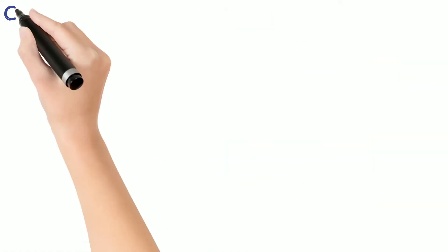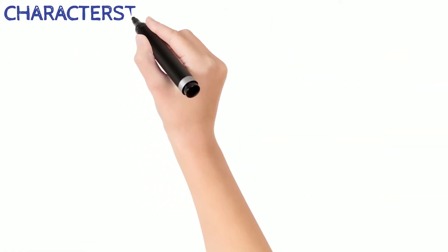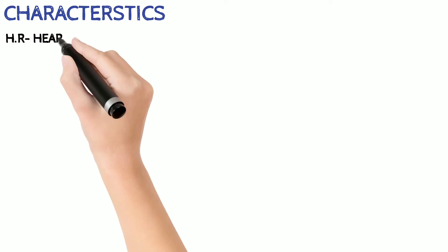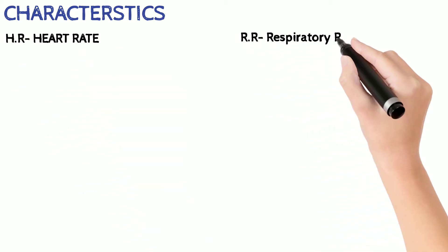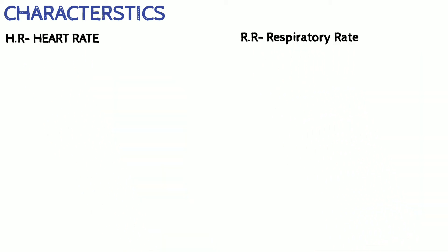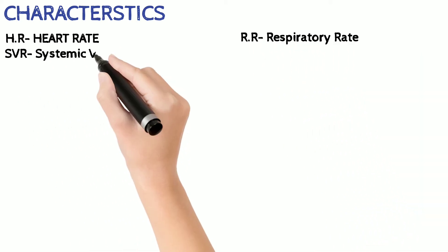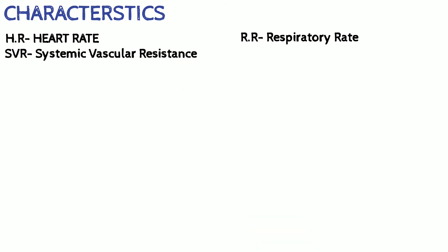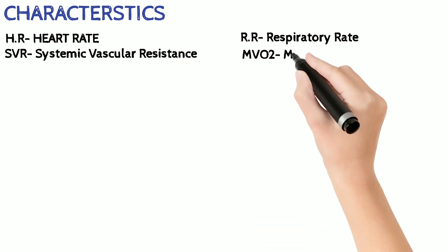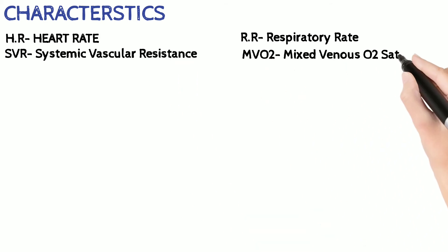Before we jump into the characteristics of shock, let's get familiar with some terms: heart rate, respiratory rate, systemic vascular resistance (SVR) which means the resistance offered by the blood vessels to the blood flow, and MVO2 which means the oxygen level returning to the heart by the major veins.